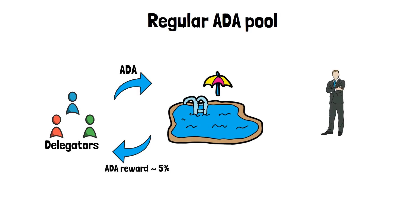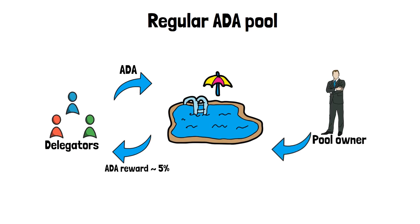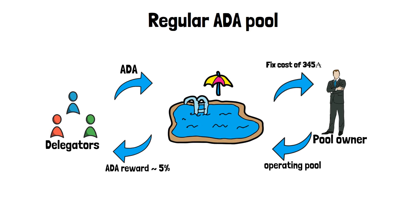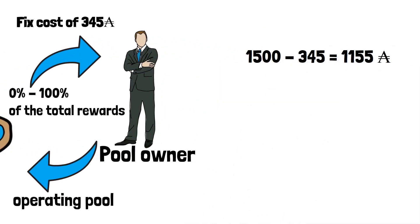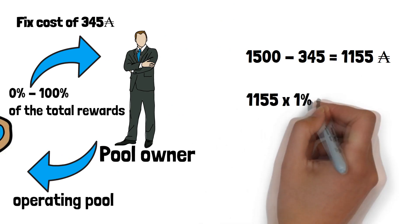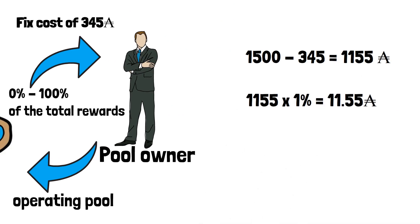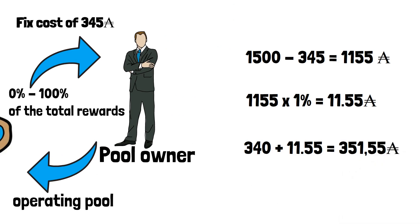On the other end, there is a pool owner who operates a pool and is responsible for a stable and fully functioning pool. Pool owners are able to define what the minimal costs of operating a staking pool are. The minimal amount is 345 ADA plus from 0 to 100% of generated rewards. To put this into numbers: assuming the pool operator sets a 1% fee and the pool gets 1,500 ADA as rewards in an epoch, by the end of every epoch the pool owner will receive around 350 ADA.